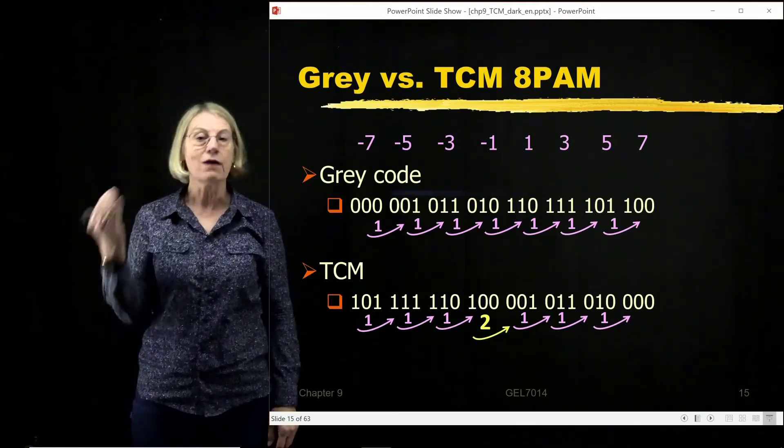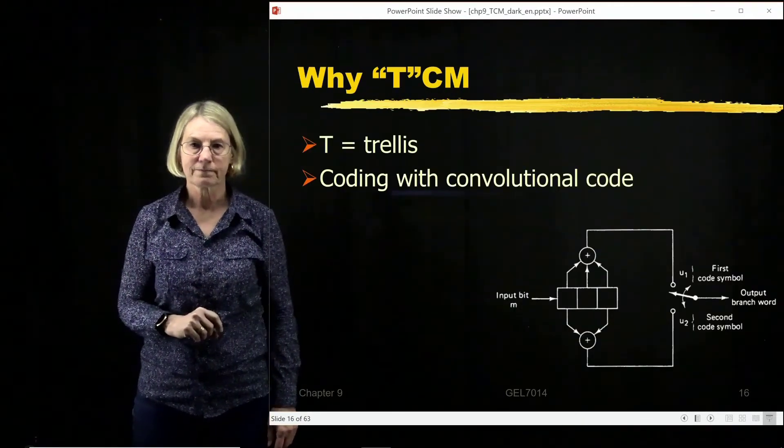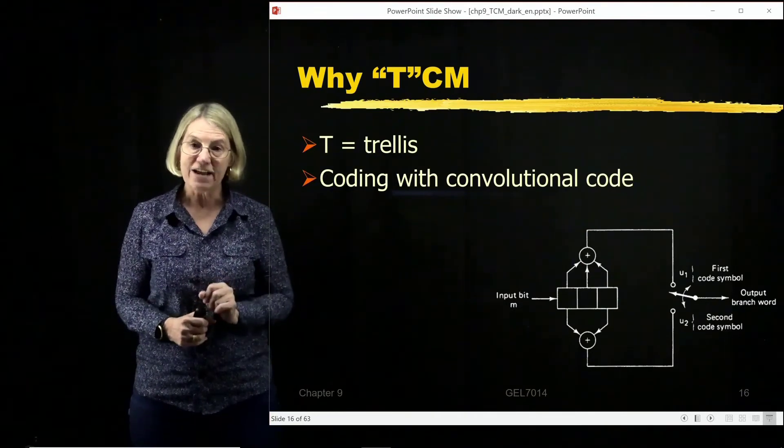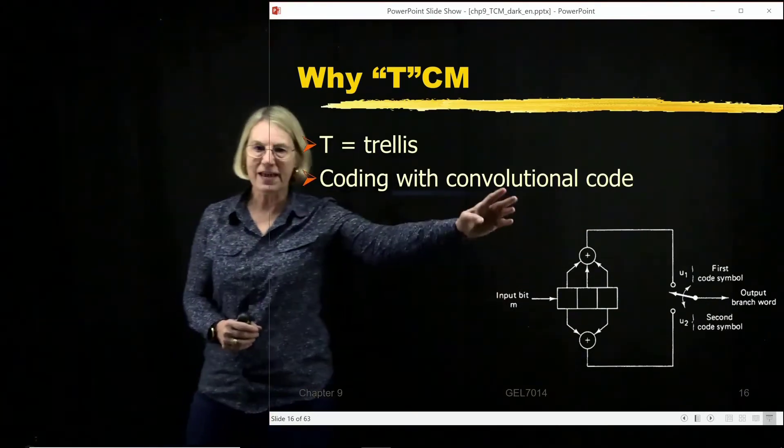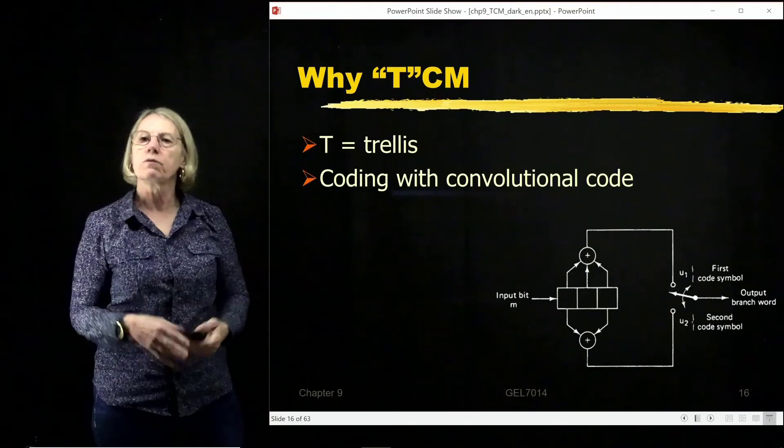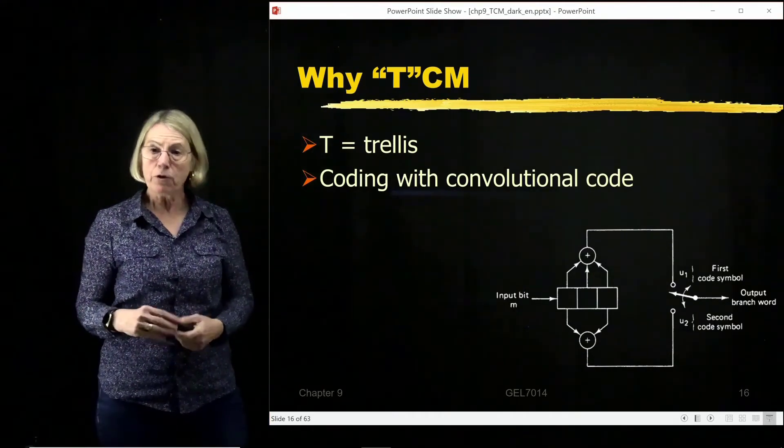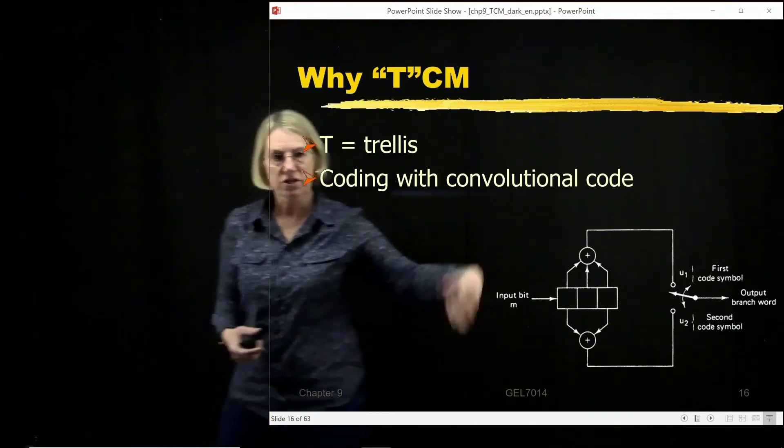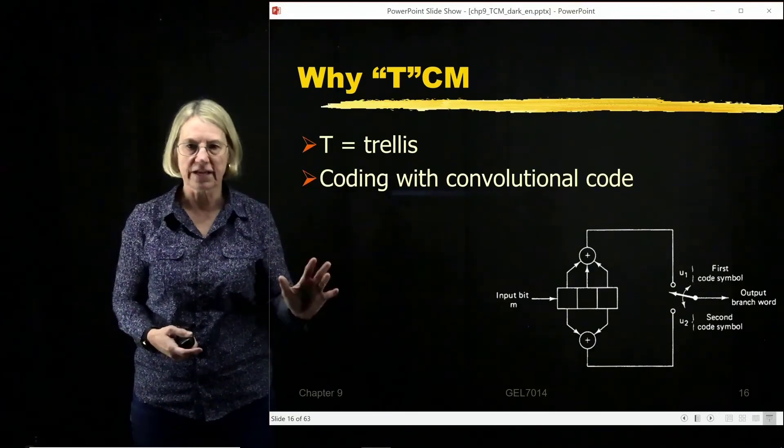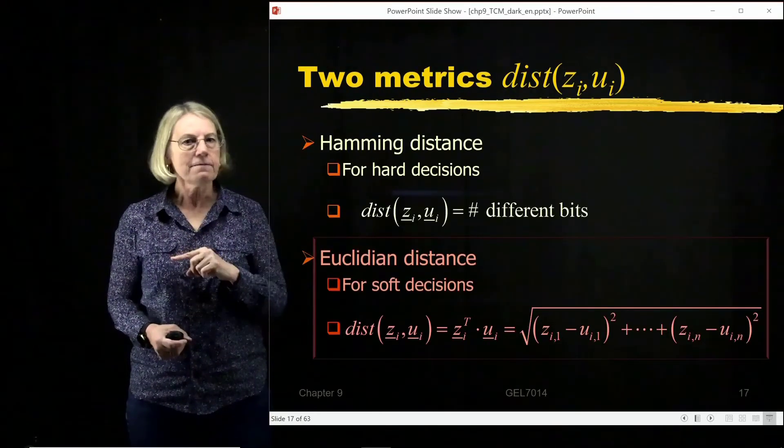Trellis-coded modulation, the T stands for trellis. That's our first indication that the coding we're going to do is going to be a convolutional coding, because we know that with convolutional coding we use a trellis to do the decoding. We're going to do convolutional coding within our trellis-coded modulation. I'm going to take the example we saw previously for a convolutional encoder. We're going to keep this example and carry it into how would I use it in trellis-coded modulation as opposed to just a convolutional encoder.